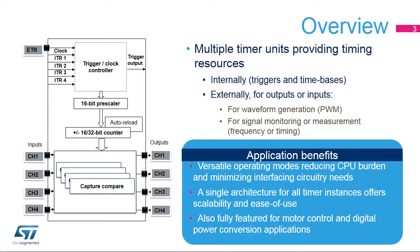External timer clocking allows counting of external events or to have a counting period externally adjusted. The clock source can be provided by other on-chip timers using one of the four internal trigger inputs ITR1 through ITR4. Input pins 1 and 2 can also serve as external clocks, with the option of including digital filters to remove spurious events. The external trigger input (ETR) can be configured as an external clock with a digital filter, programmable edge sensitivity, and a prescaler stage to reduce the frequency of incoming signals.